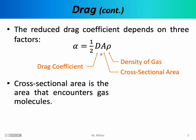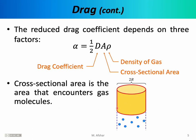The cross-sectional area requires a little explanation. The cross-sectional area is the area that encounters gas molecules — essentially the area that is pushing gas molecules out of the way. For example, if we imagine a cylindrical-shaped object falling through the atmosphere, it has to clear a cylindrical column-shaped path. Any molecule in that path will be displaced and collide with the cylinder, while molecules outside the path will not collide. So those collisions contribute to the resistive force.